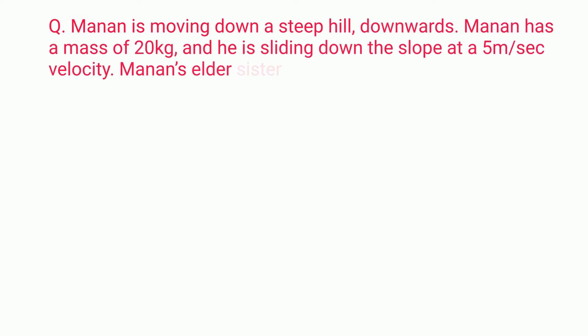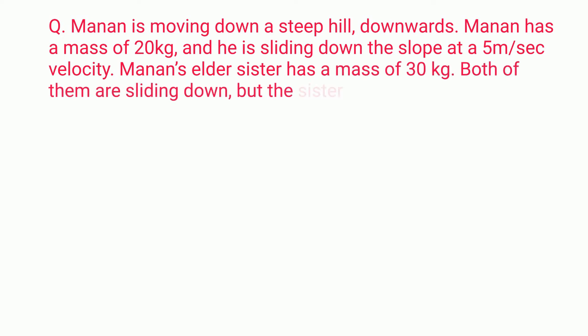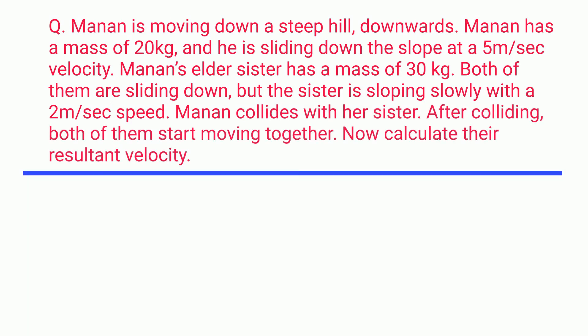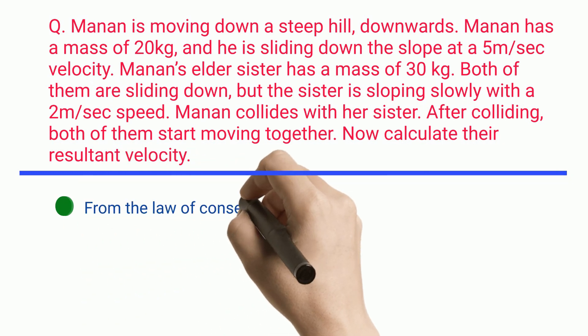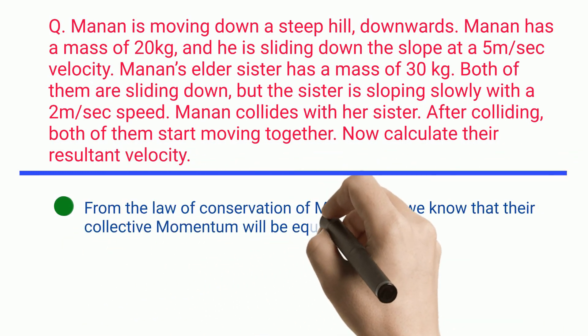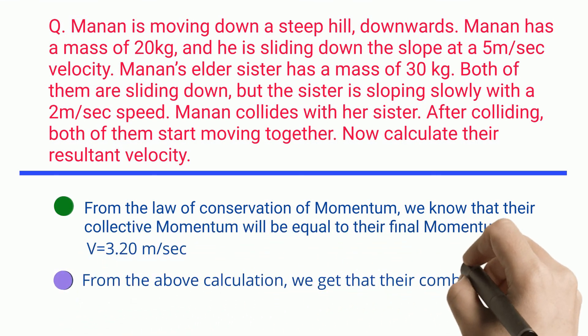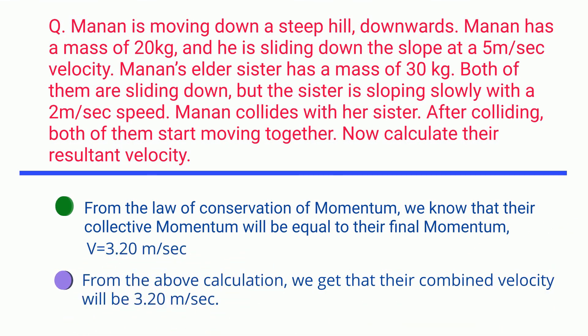Problem: Manin is moving down a steep hill. Manin has a mass of 20 kg and is sliding down the slope at 5 m/s. His elder sister has a mass of 30 kg and is sliding down more slowly at 2 m/s. Manin collides with his sister, and after colliding both of them start moving together. Using the law of conservation of momentum, their collective momentum equals their final momentum. The combined velocity is calculated to be 3.20 m/s.